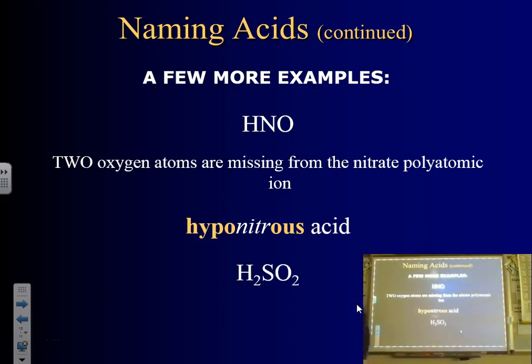Sulfate is SO4, but if we have SO2 — that's two oxygens removed — this would be hyposulfurous acid.